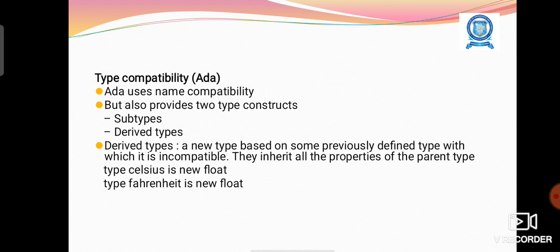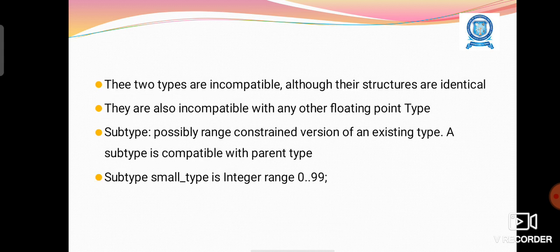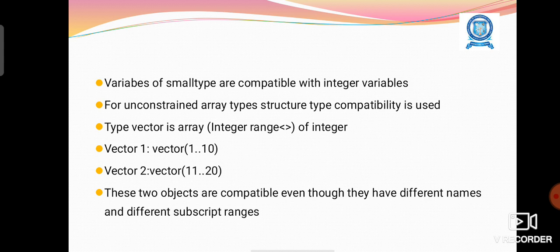Ada uses name compatibility but also provides two type constructs: subtypes and derived types. In some languages, variables of small type are compatible with integer types. For unconstrained array types, structure type compatibility is used.